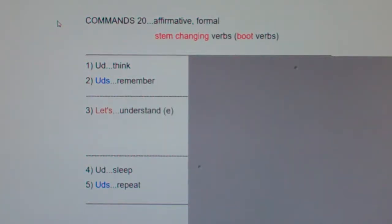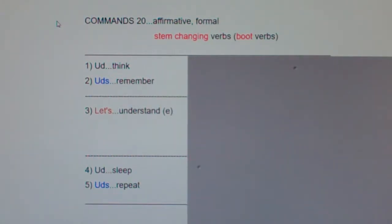This is Commands 20. In this clip, you're going to learn how to make affirmative formal commands using verbs that are known as stem-changing verbs or boot verbs. Verbs like where the O turns into UE, or the E turns into IE. So you're going to learn how to order one boss to do something, how to order a group of people to do something, or say to your friends, let's do something.